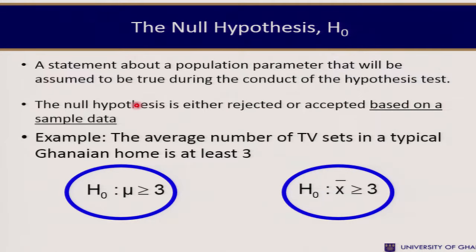Therefore, we need to know what the null hypothesis is and what the alternate hypothesis is. The null hypothesis is a statement concerning the population parameter that needs to be tested, and is assumed to be true during the conduct of the hypothesis test. It is what is basically upheld until there is evidence against it, and is either rejected or accepted based on sample data.